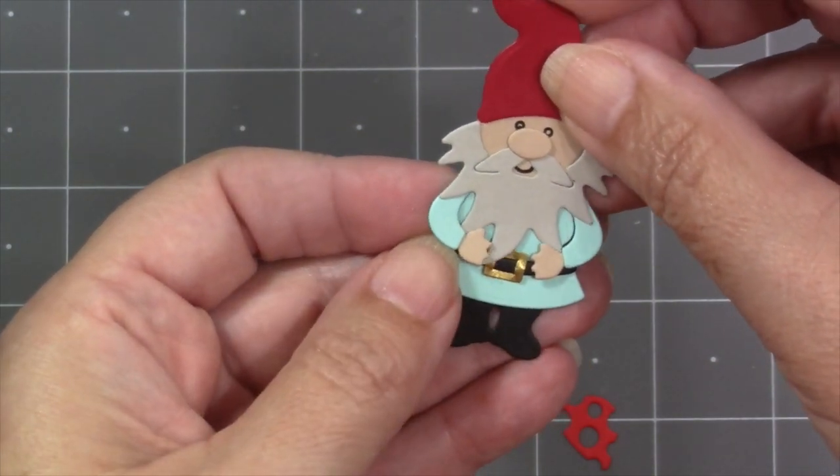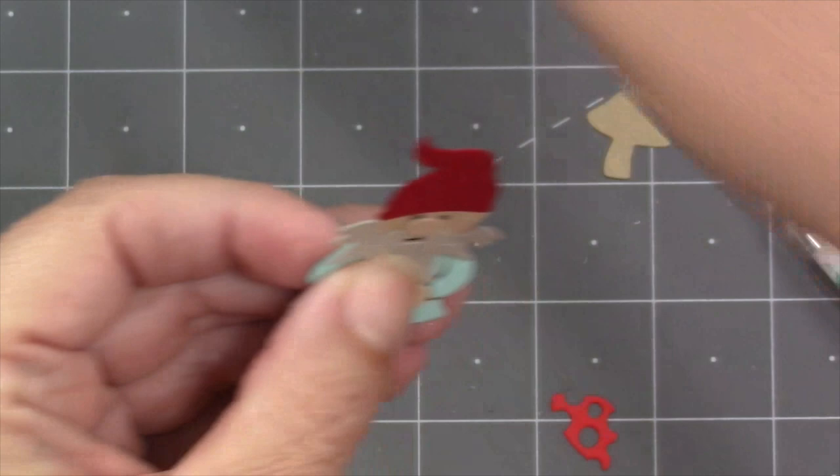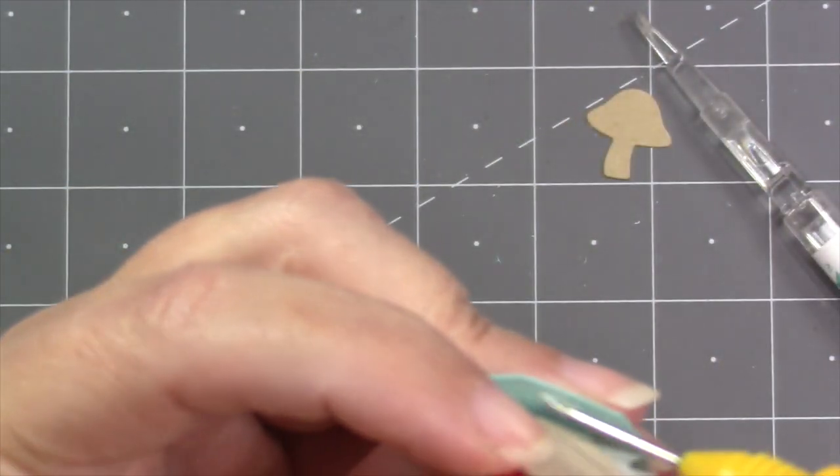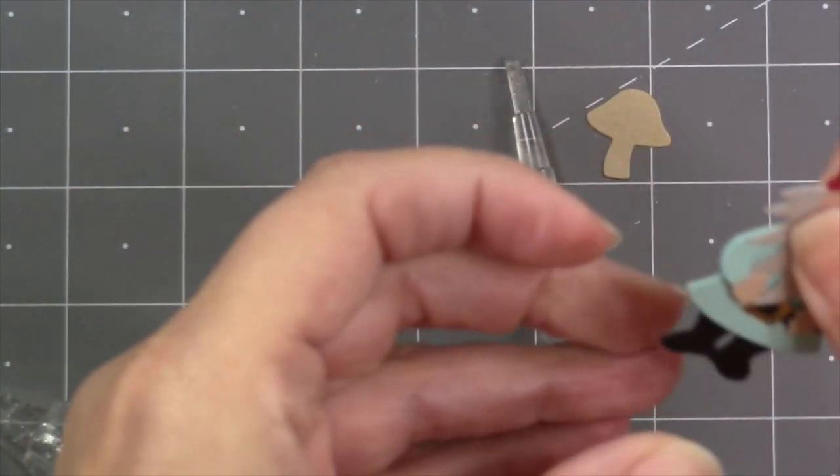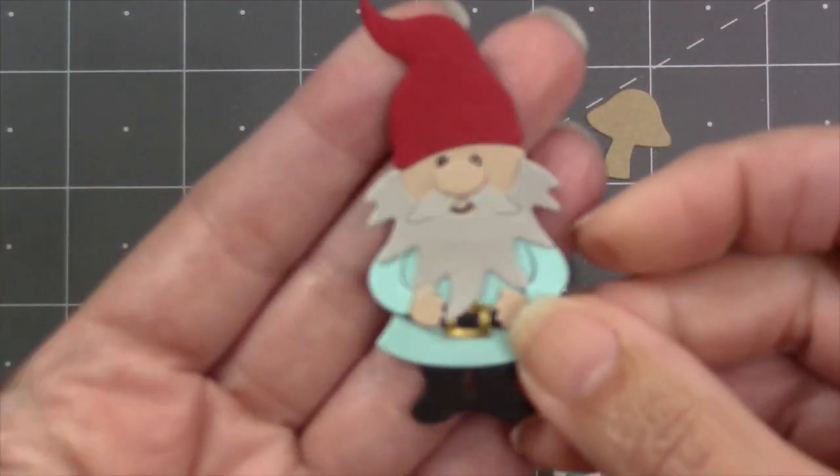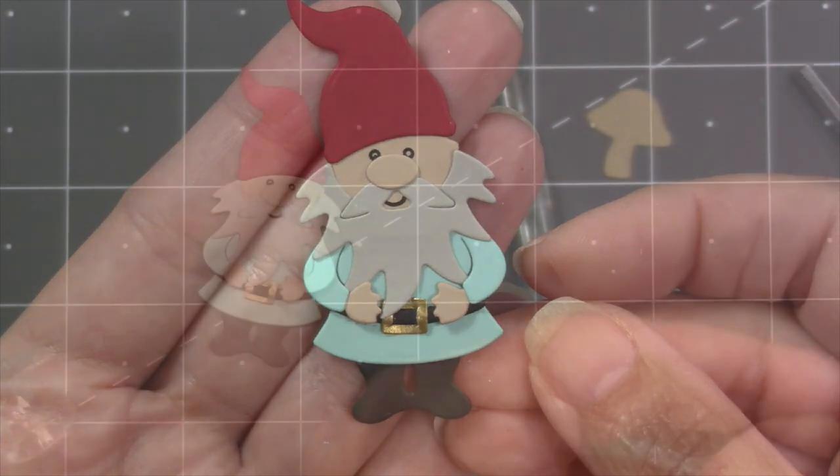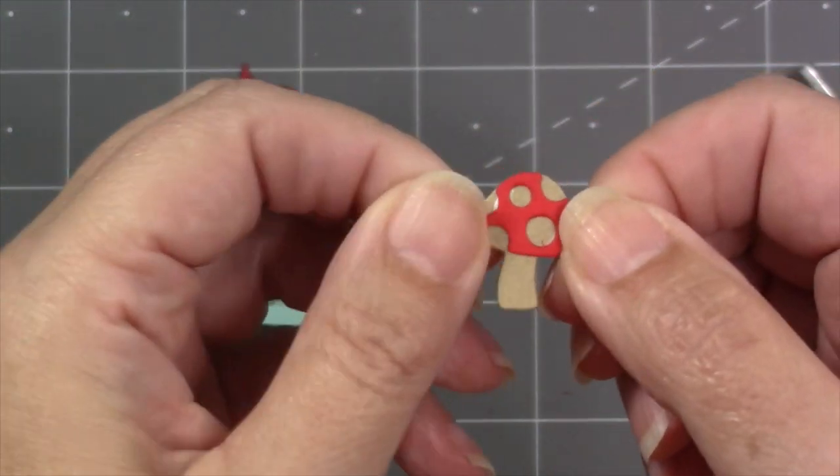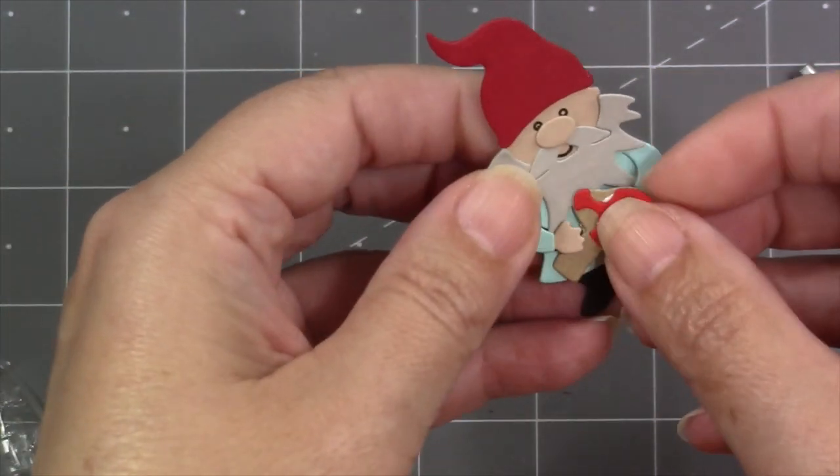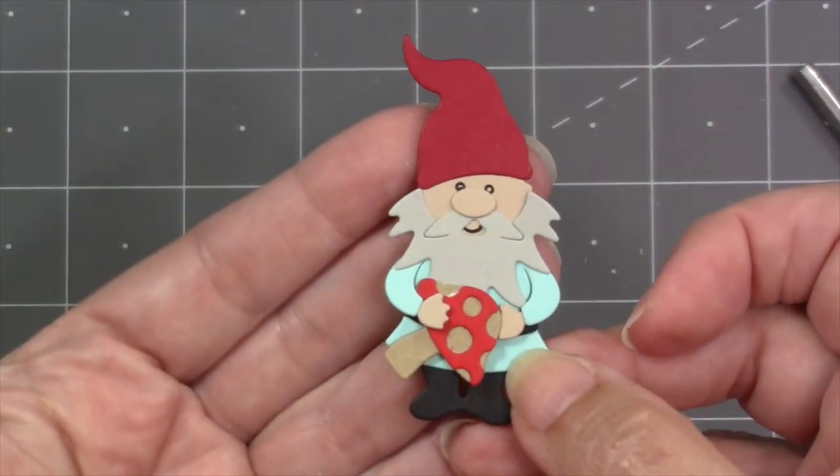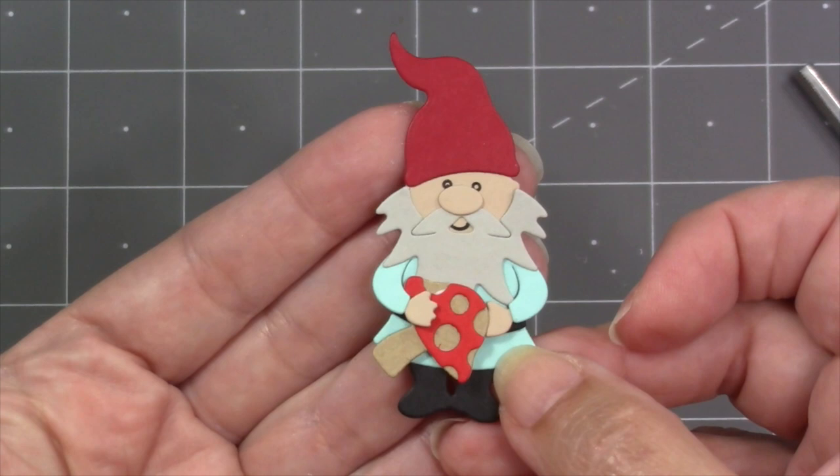And then that's going to change the look of the gnome so they don't all look identical. But then just secure the head to the body with a little bit of glue, and then that's going to finish out that basic assembly of the gnome. There are two dies in the set that will combine to make a mushroom, and that is of course optional but looks really cute when the gnome is holding it.